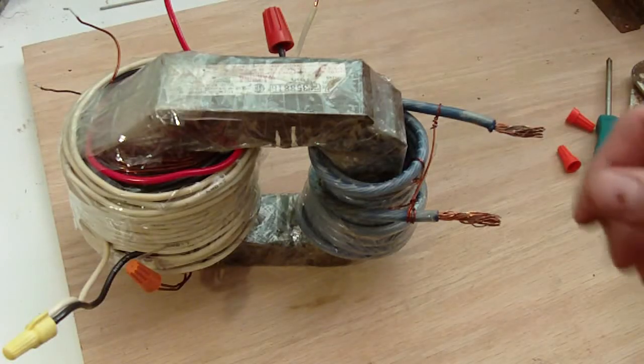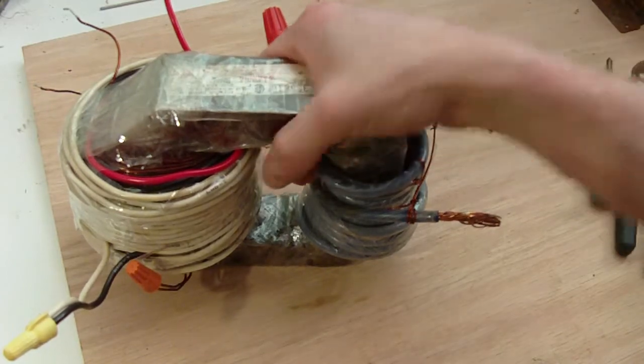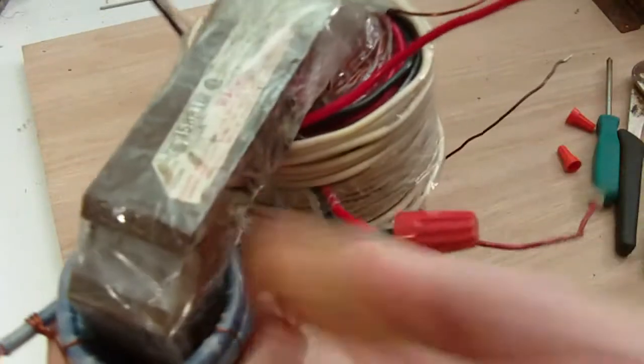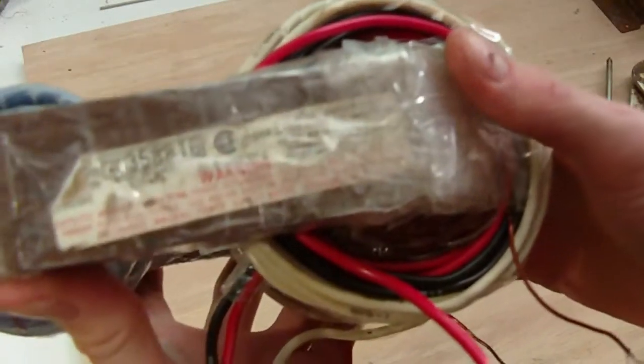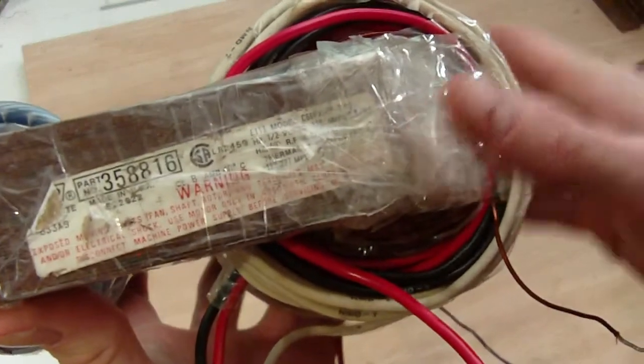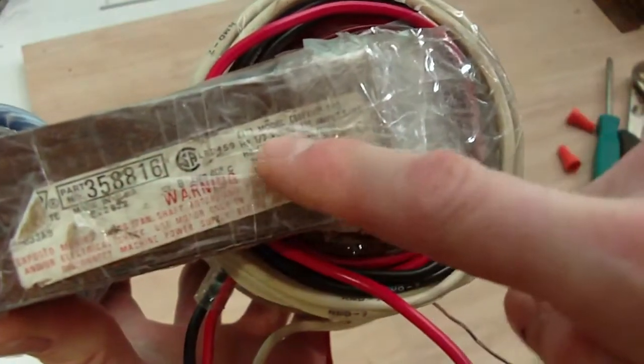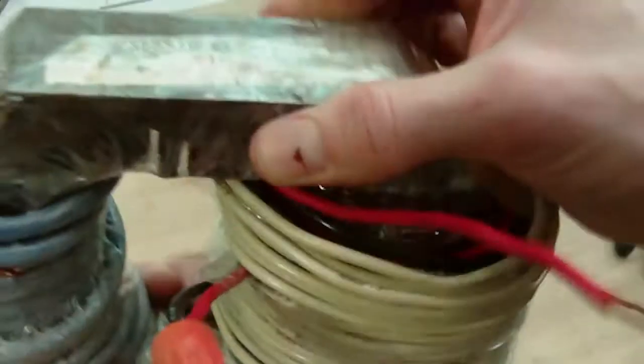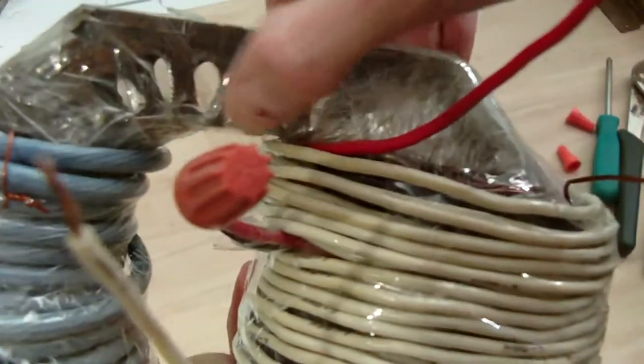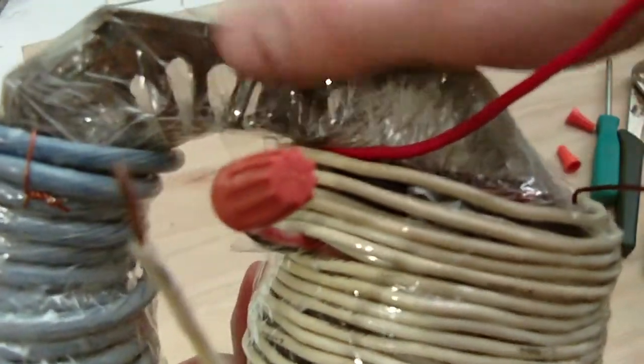What I built this transformer out of was a half-horsepower electric furnace fan motor, also called a squirrel cage motor or an induction motor. You can see the sticker on here. This was the stator from the electric motor. You can see all the little channels where the windings went through.